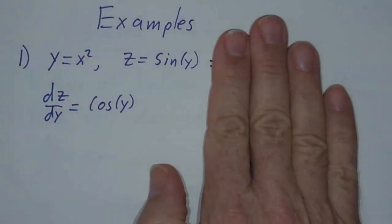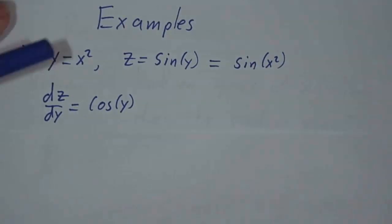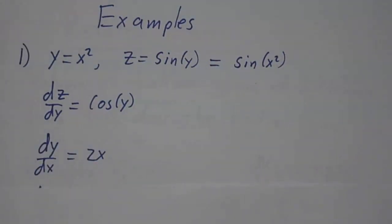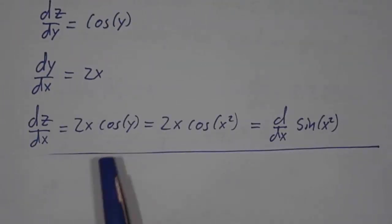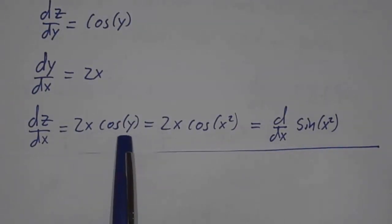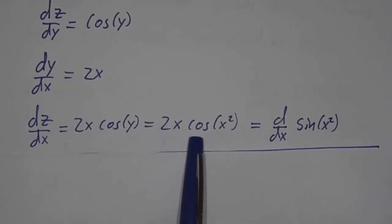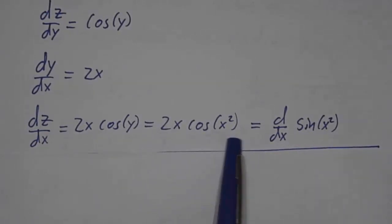Well, since z is sine of y, we know that dz/dy is cosine of y. And since y is x squared, we know that dy/dx is 2x. So dz/dx is 2x times cosine of y. Now, be careful, it's not 2x times cosine of x, it's 2x times cosine of y. So it's 2x times cosine of x squared, and that's the derivative of sine of x squared.